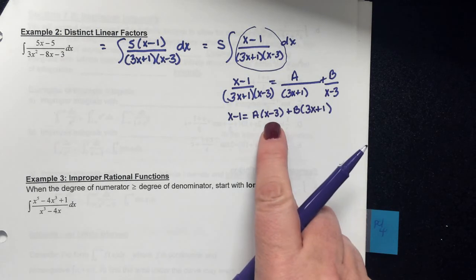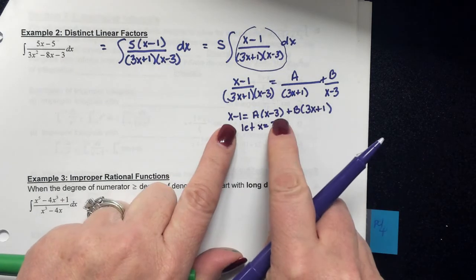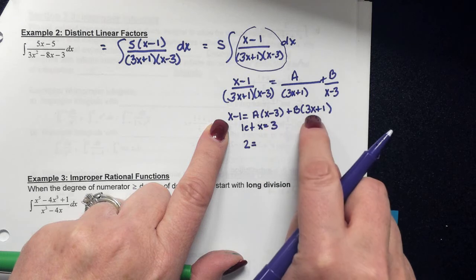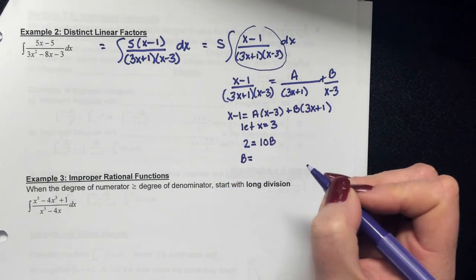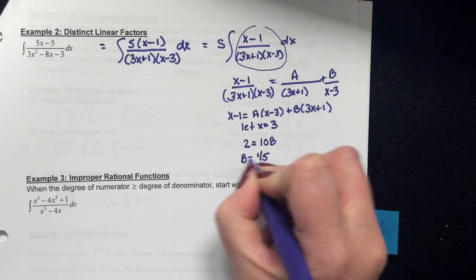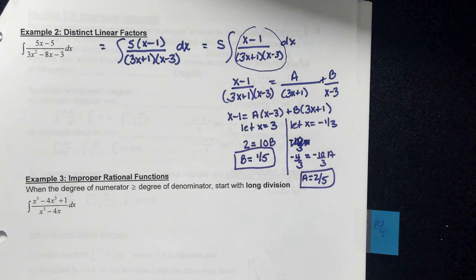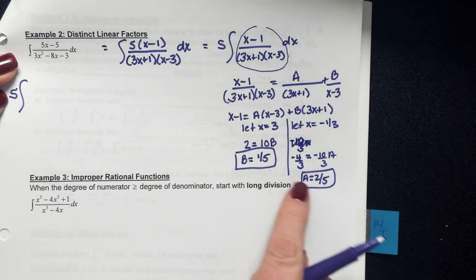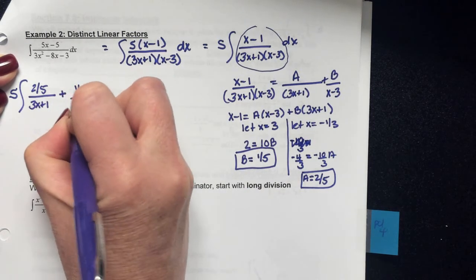Clearing fractions gives x−1 = A(x−3) + B(3x+1). For the factor x−3, let x=3: 3−1=2 equals B·(3·3+1) = 10B, so B = 2/10 = 1/5. Now find A using the factor 3x+1, whose zero is x=−1/3. Be careful solving for A and B — if you make a mistake there, the rest of the problem falls apart. A comes out to 2/5. Rewrite the integral as 5 times the integral of [(2/5)/(3x+1) + (1/5)/(x−3)] dx.